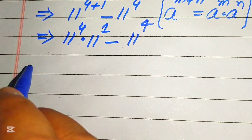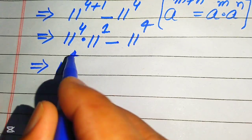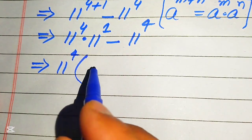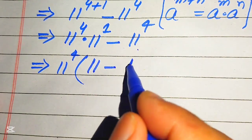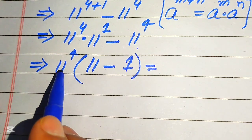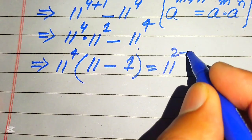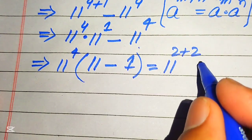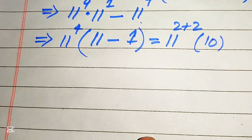In the next step we factor out 11 to the power of 4 as the common factor. The remaining terms give us 11 minus 1, which equals 10. So we have 11 to the power of 4 multiplied by 10. We then break 11 to the power of 4 as 11 to the power of 2 plus 2.